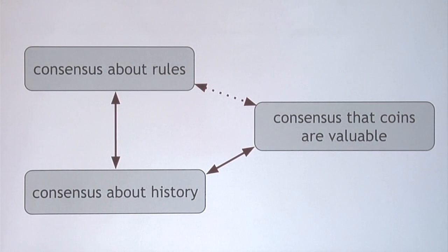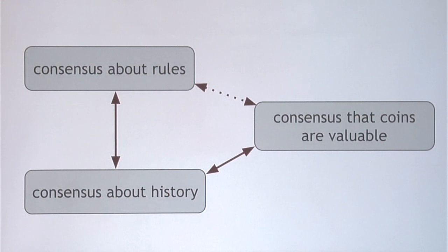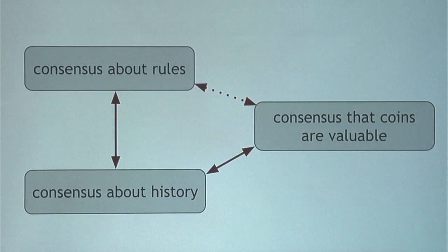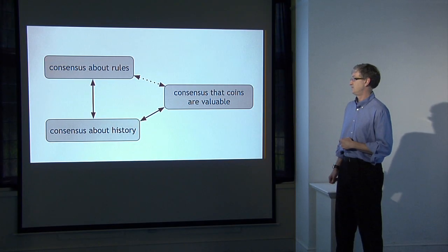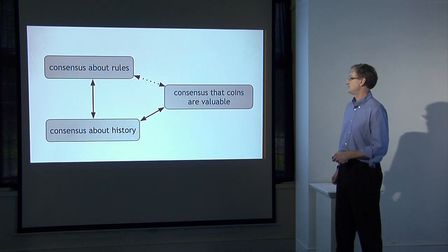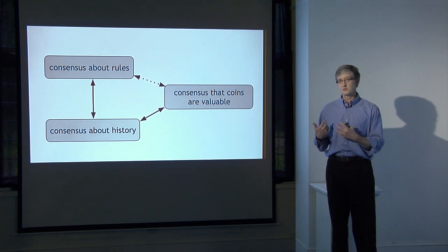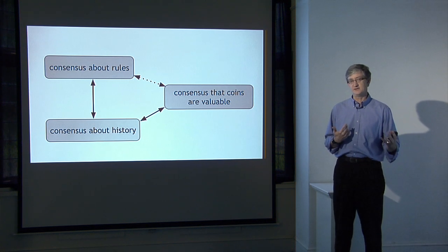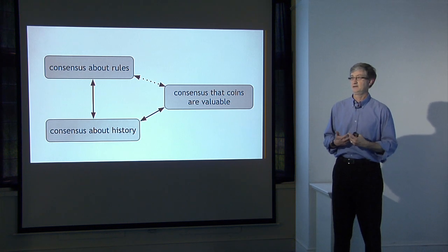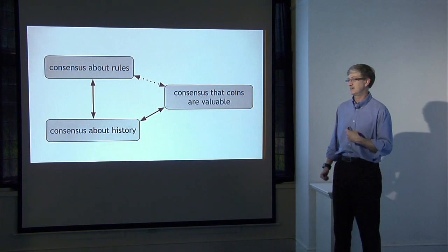In a similar way, consensus about history and the consensus that coins are valuable are also tied together. Consensus about history means we agree on who owns which coins, and agreeing on who owns which coins is a necessary prerequisite for believing that coins have value. If there's no consensus that I own a particular coin, I won't expect people to accept it from me in payment. The consensus that coins are valuable is also needed to make the consensus about history work — the block reward creates an incentive for people to follow the expectations about mining.